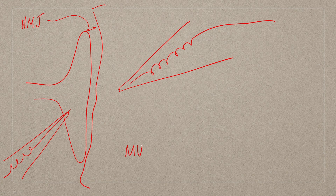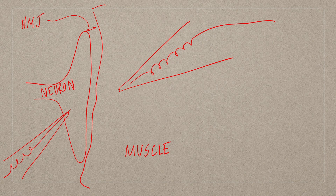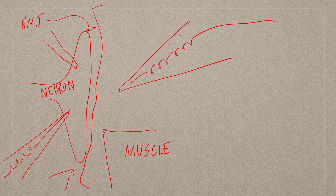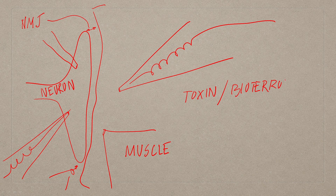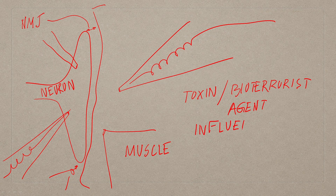If this is the muscle site and this is the neuron site, you can inject different kinds of compounds in this configuration — a compound under test — or you can inject them in this vicinity and study the different currents and voltages involved in this process. This is one of the most sophisticated biosensing you can do for toxin and bioterrorist agent influencing the neuromuscular junction.